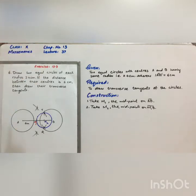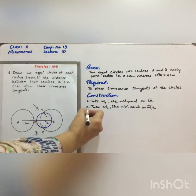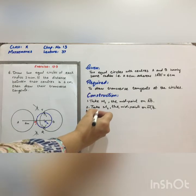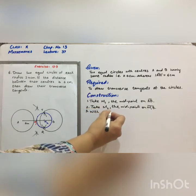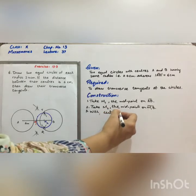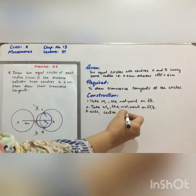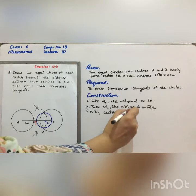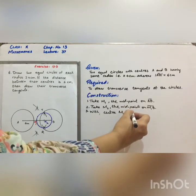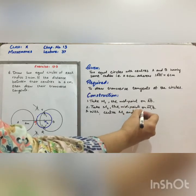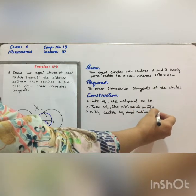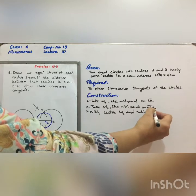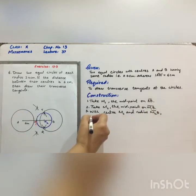Step 3: with center M2 and radius M2B, draw a circle.